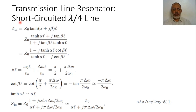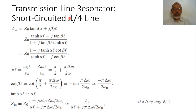For the first case with a short-circuited lambda-over-4 transmission line, the input impedance is given by Z₀ tanh(αl + jβl). As mentioned in the previous video, this tanh can be expanded as (tanh(αl) + j·tan(βl)) / (1 + j·tan(βl)·tanh(αl)). When the length is lambda-over-4, the value of βl equals 2π/λ × λ/4, which is π/2.